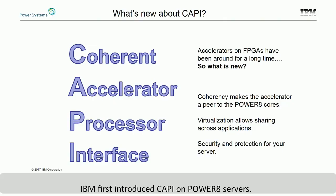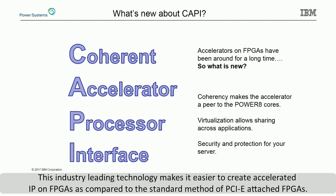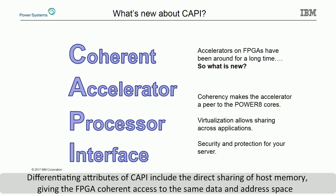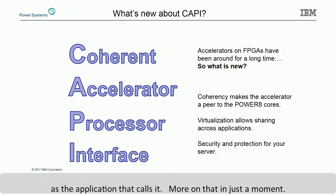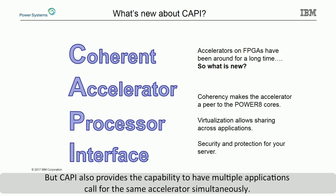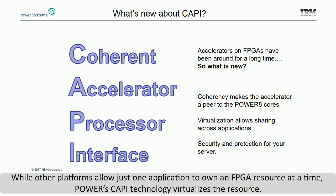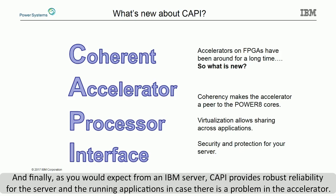IBM first introduced CAPI on Power8 servers. This industry-leading technology makes it easier to create accelerated IP on FPGAs as compared to the standard method of PCIe-attached FPGAs. Differentiating attributes of CAPI include the direct sharing of host memory, giving the FPGA coherent access to the same data and address space as the application that calls it. CAPI also provides the capability to have multiple applications call for the same accelerator simultaneously, while other platforms allow just one application to own an FPGA resource at a time. Power's CAPI technology virtualizes the resource. Finally, CAPI provides robust reliability for the server and the running applications in case there's a problem in the accelerator.